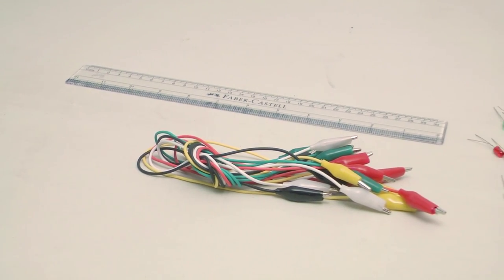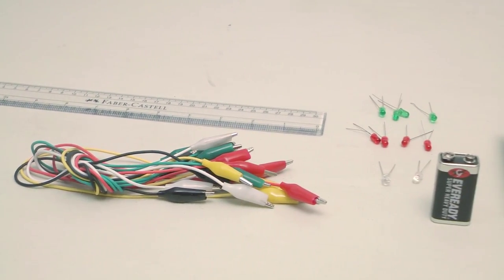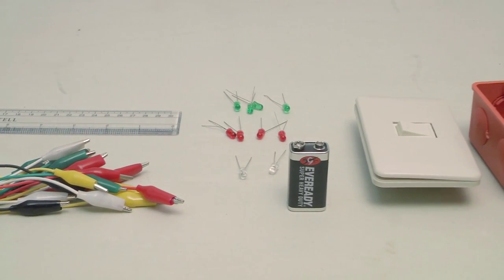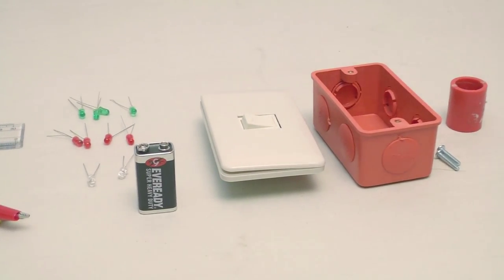We are going to need a ruler, alligator clips, LED lights, a 9V battery, a switch, and an electrical box.